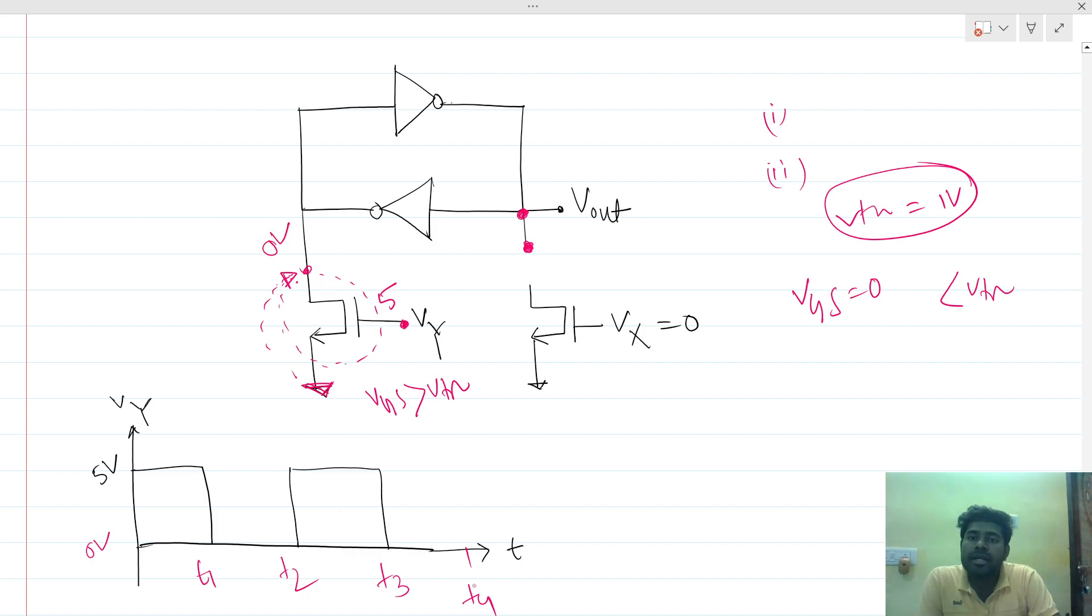If this zero volt reaches here, this inverter will invert this output, so this output will be 5 volts. And if this is 5 volts, this inverter will make this node zero volts. This is a cross-coupled latch. This loop is always valid, so this becomes fixed voltage and it is doing latching.